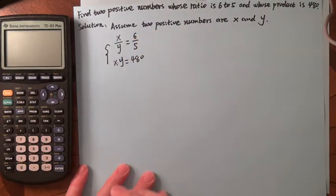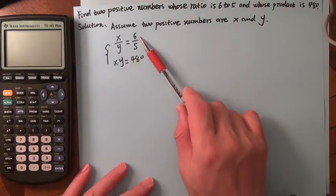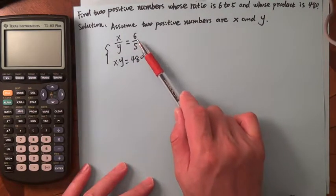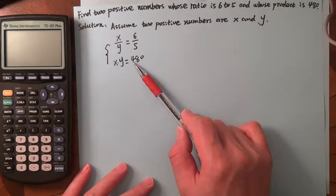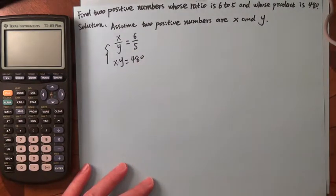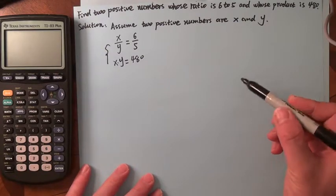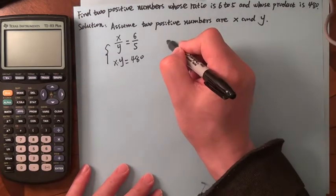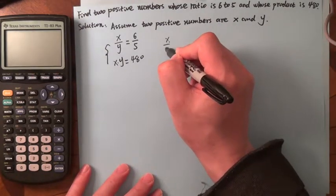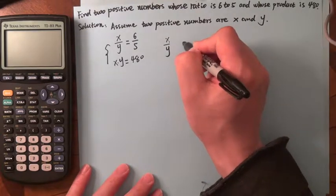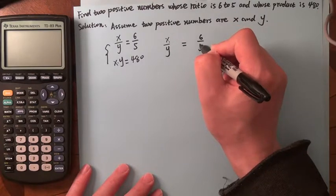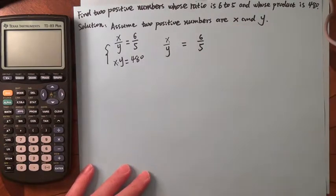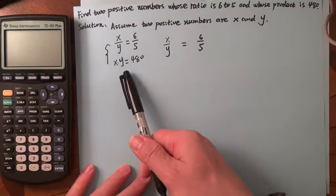If you assume that X is 6 and Y is 5, then 5 times 6 is only 30, not 480. Here is the technique: you know X/Y = 6/5, and you also know X times Y = 480.